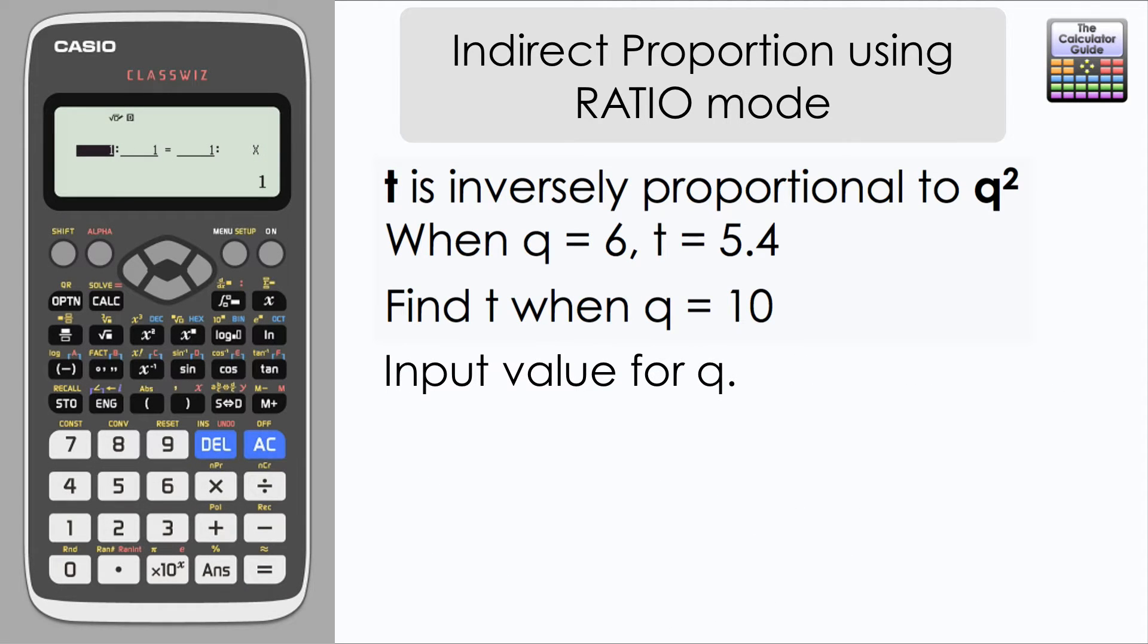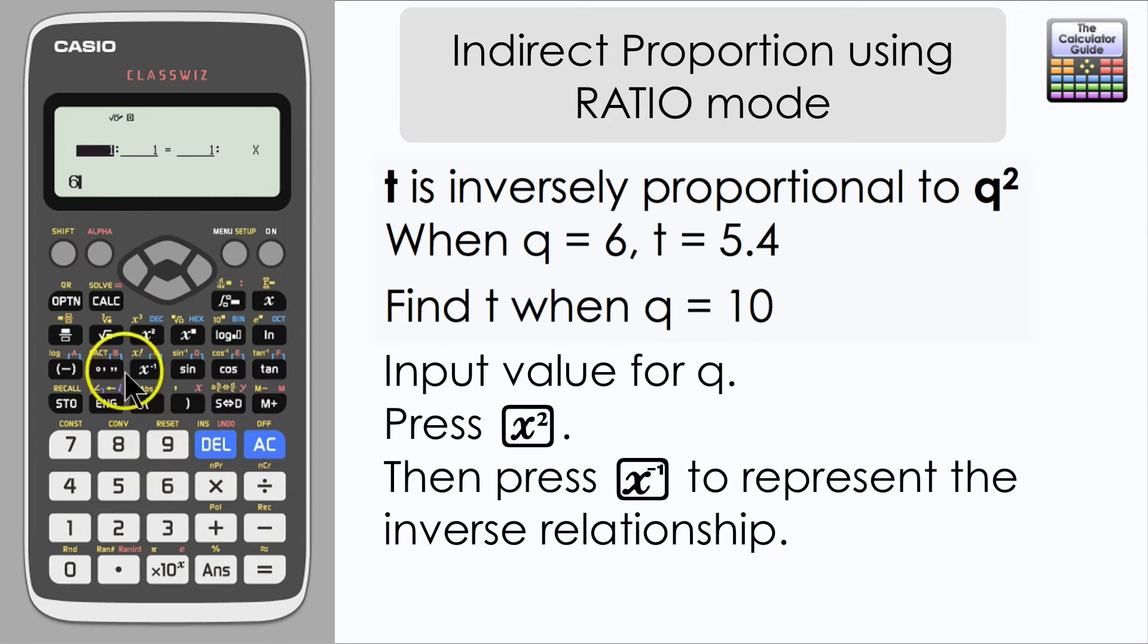So I'm going to input the Q value first. I have to be very careful to remember the relationship between T and Q. So when Q equals 6, T equals 5.4. I'm inputting 6 for Q but there isn't a direct relationship between T and Q. T is inversely proportional to Q squared. So the first thing I'm going to do is enter squared so that I have a square value for Q. And the quickest way to do an inverse is to use the reciprocal button to the power of minus 1. You can use the fraction button and do 1 over if you prefer.